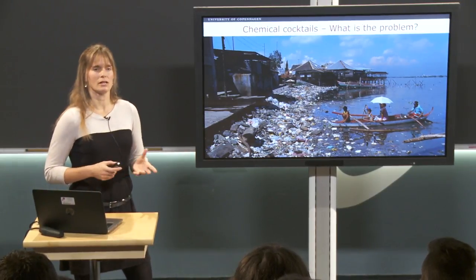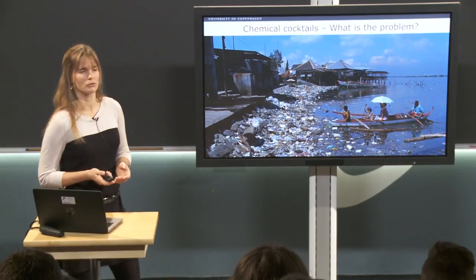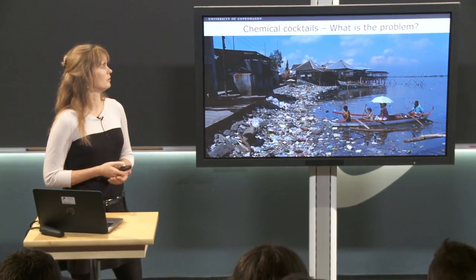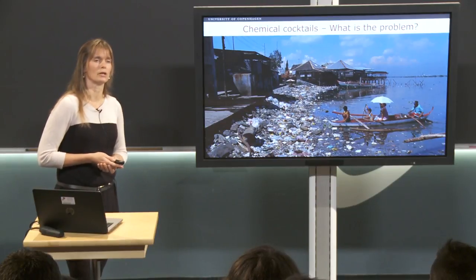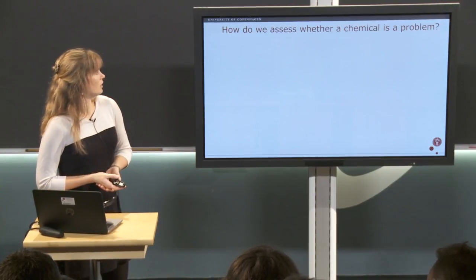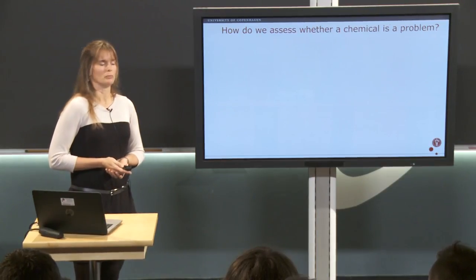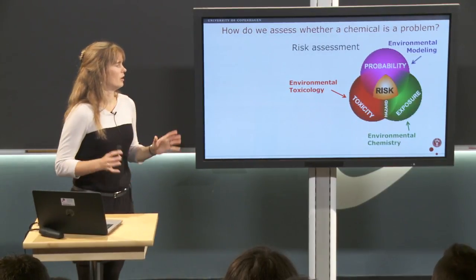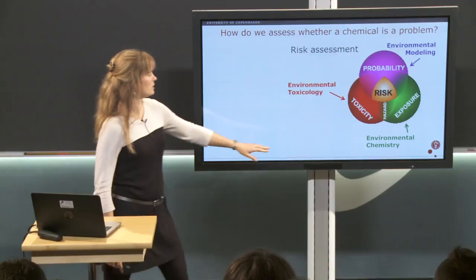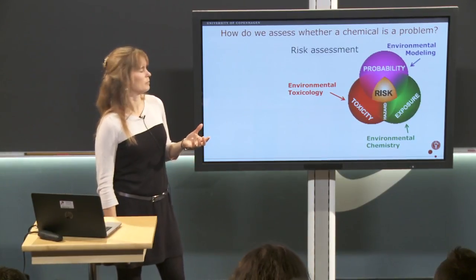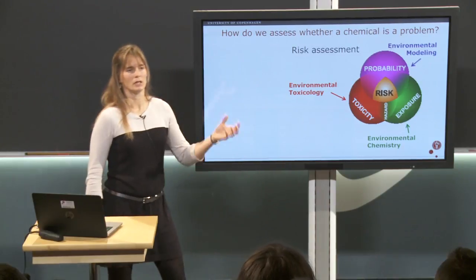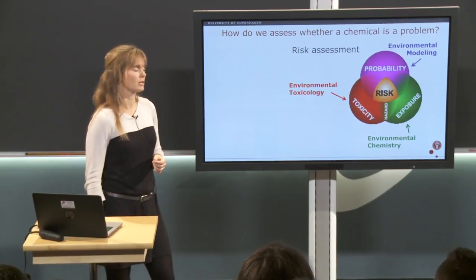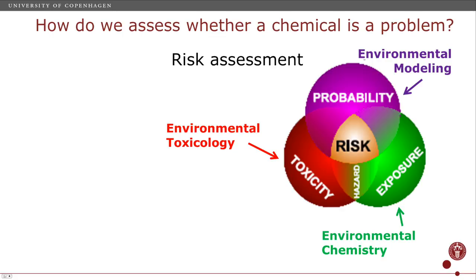To understand how to assess whether chemicals are a problem, we first have to look at how the problem is assessed if we only look at a single chemical. We do that through risk assessment, which consists of three components: understanding the toxicity of a compound, understanding if and to what extent we get exposed, and jointly the probability and concentration of exposure expresses the risk.